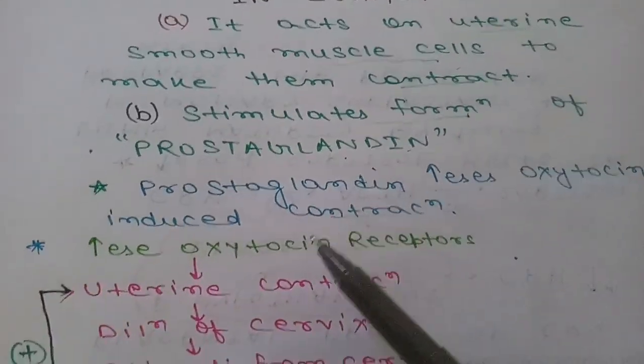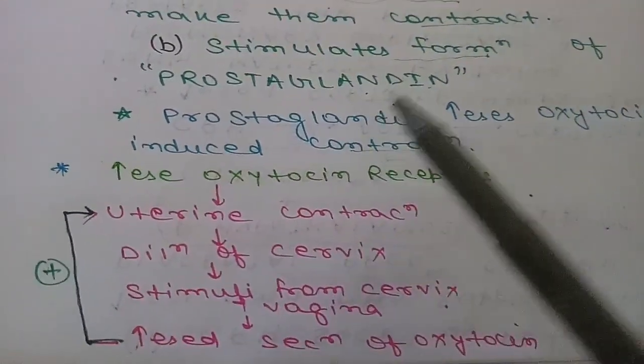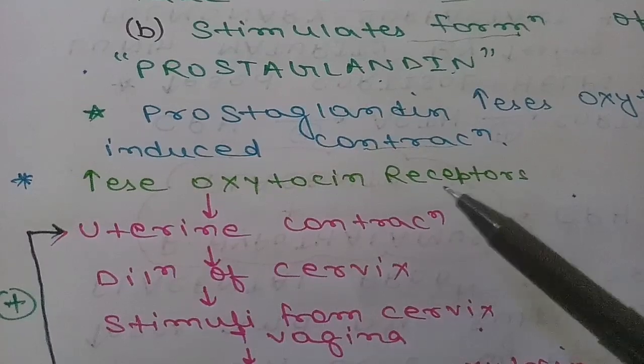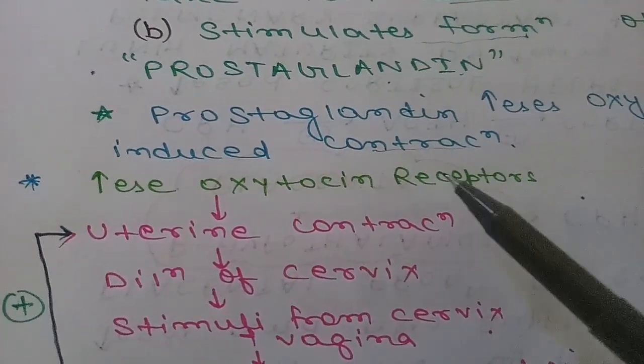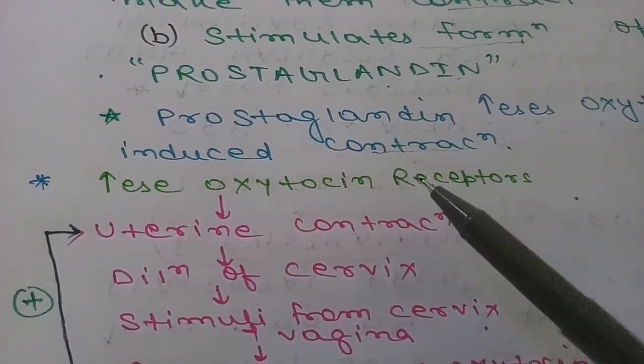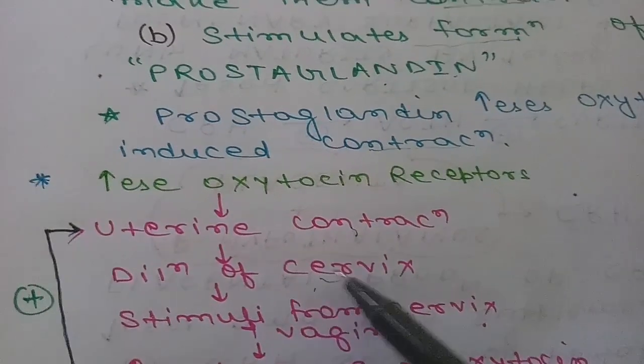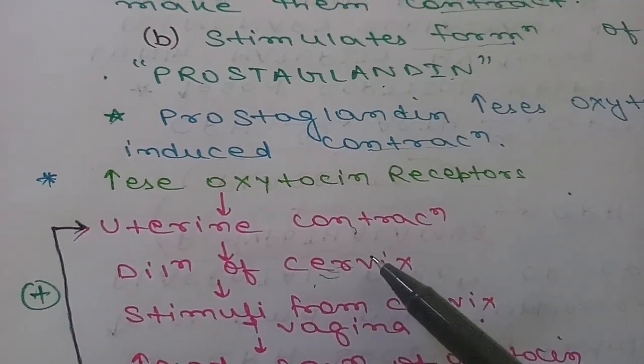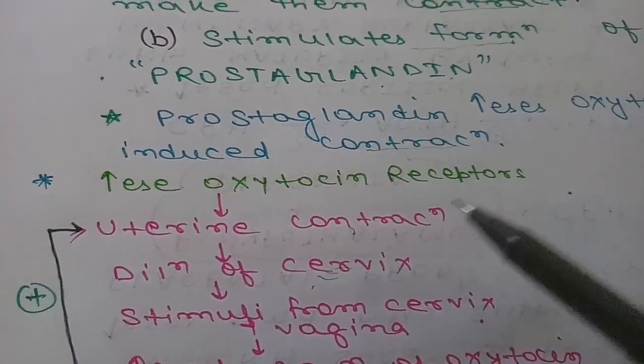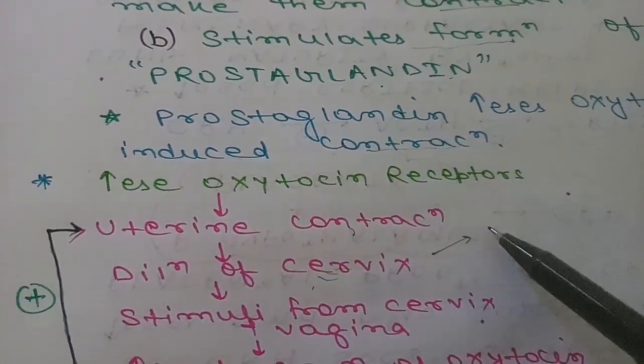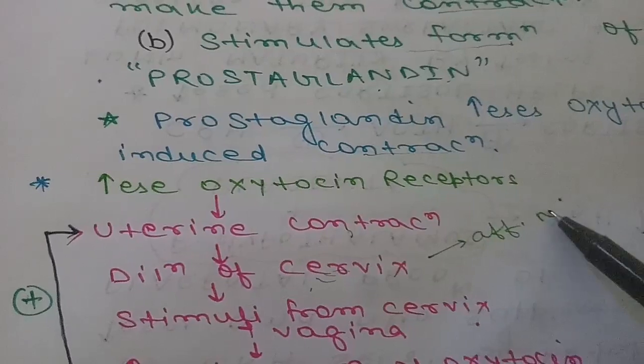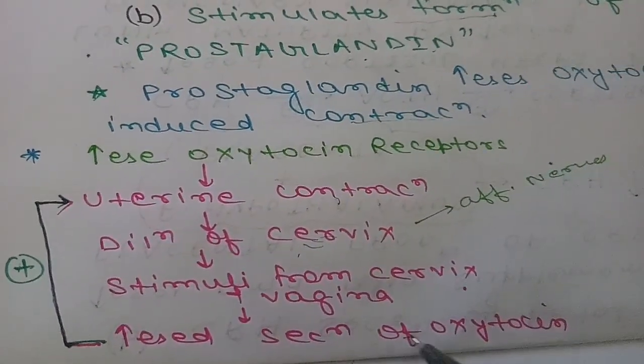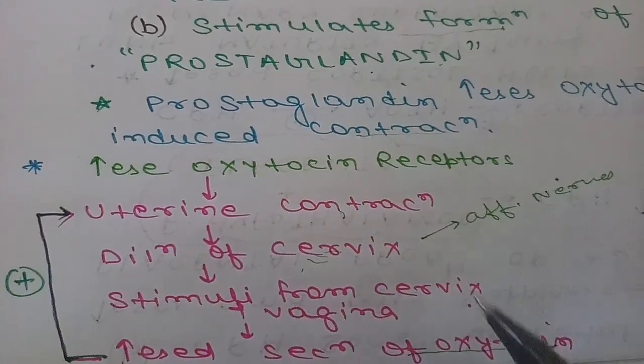Uterine contraction by oxytocin increases in a positive loop cycle. Once labor is started, the cervix will dilate and this dilation will set up signals in afferent nerves. This dilation in cervix will send signals which will ultimately increase oxytocin secretion.